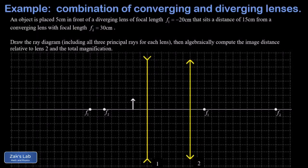In this video, we're looking at a lens combination with a diverging lens on the left, a converging lens on the right, and we have an object sitting 5 cm to the left of that diverging lens.